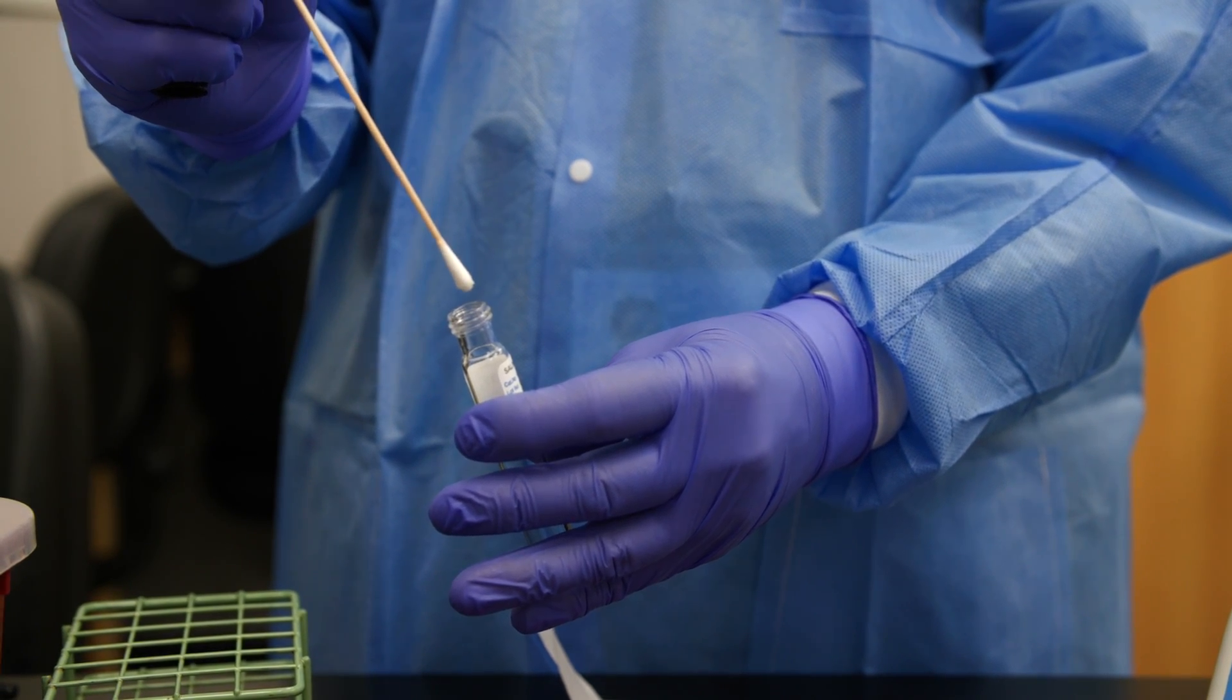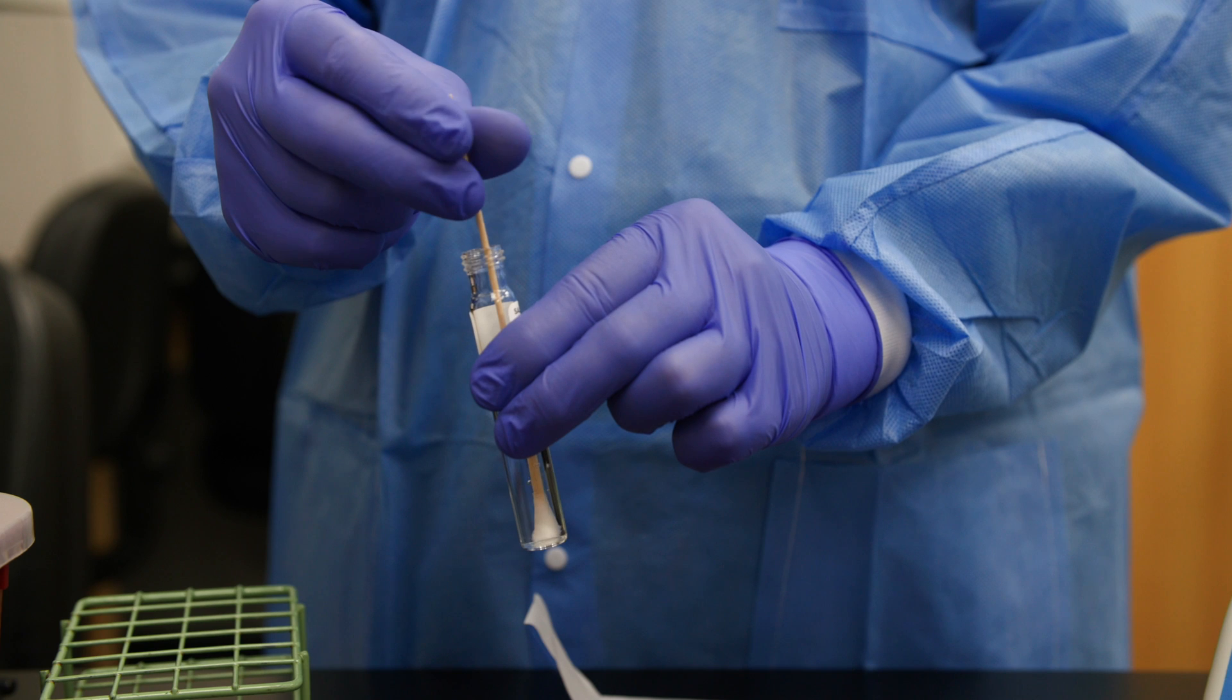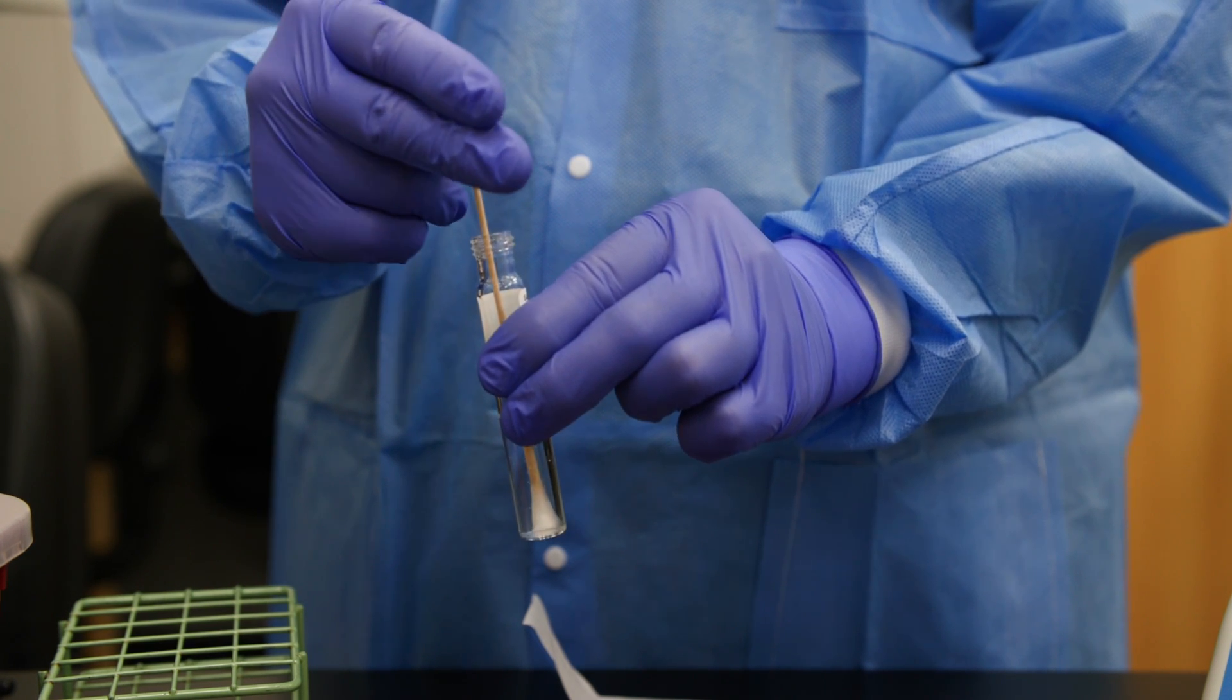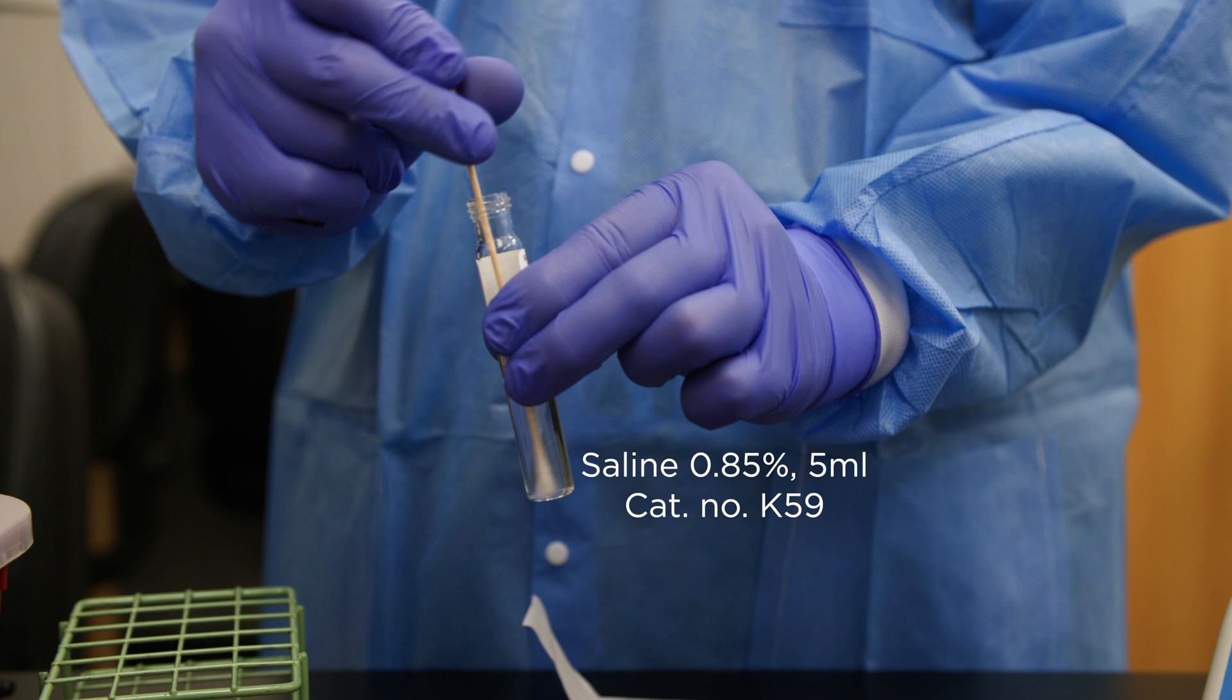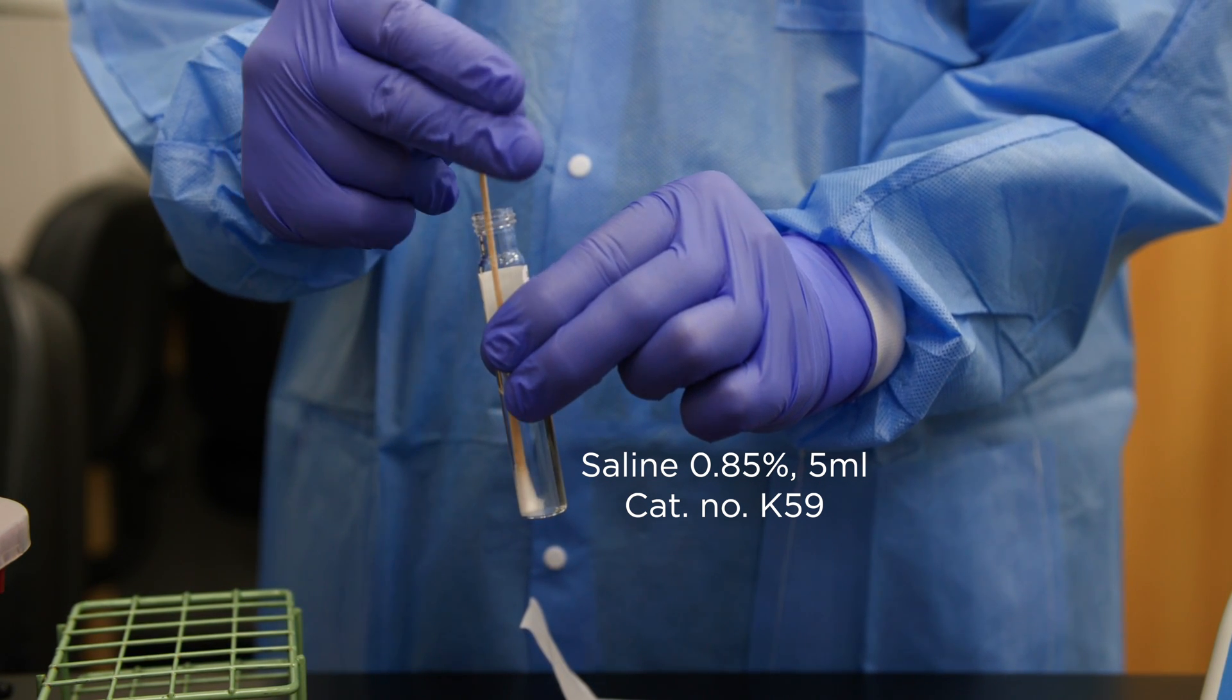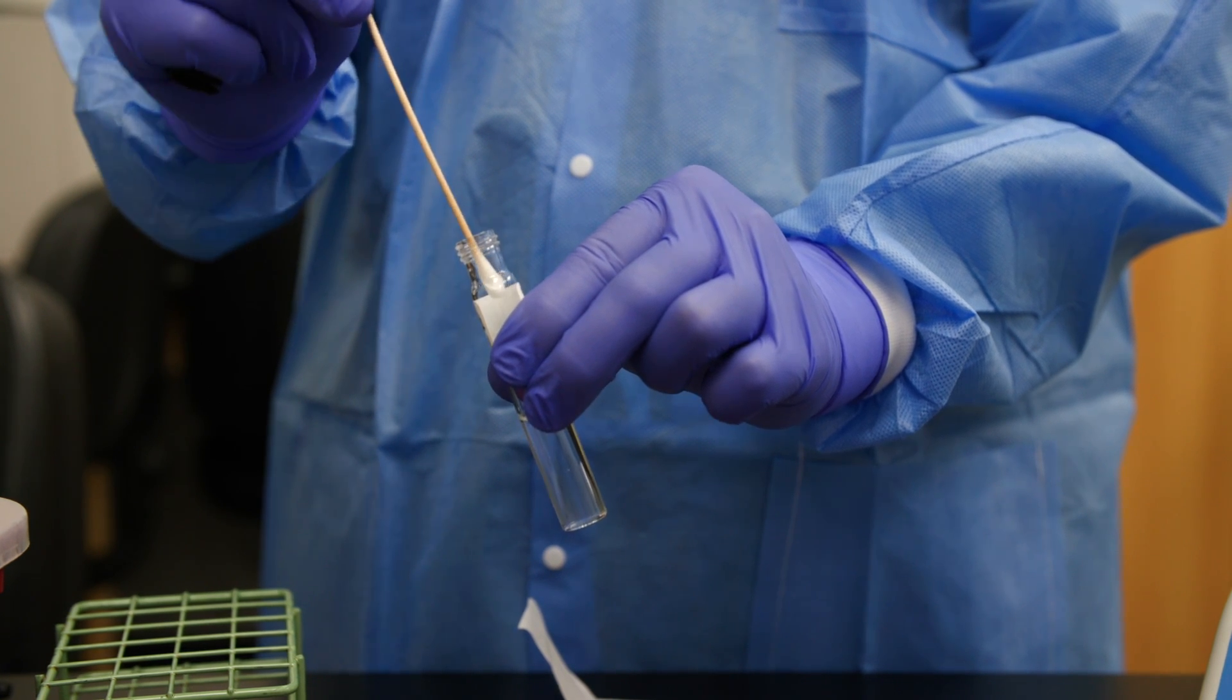Inoculate the bacteria from the swab into an appropriate diluent by rubbing the swab against the bottom and sides of the tube to create a turbid suspension. A 5 milliliter tube of saline is used in this example. Rotate the swab several times to ensure the bacteria is evenly inoculated into the diluent.